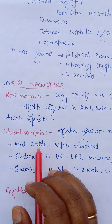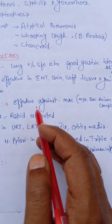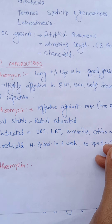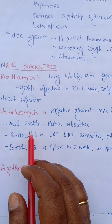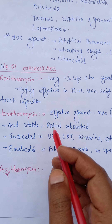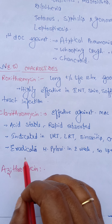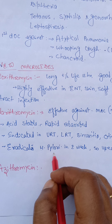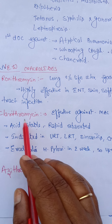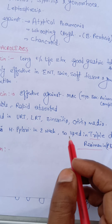Clarithromycin is a newer and effective drug. It is effective against MAC — Mycobacterium avium complex. It is acid stable, so no enteric coating is required, and it is rapidly absorbed. Because clarithromycin is acid stable, it is included in the triple regimen for peptic ulcer treatment, targeting H. pylori infection which causes peptic ulcer or duodenal ulcer.